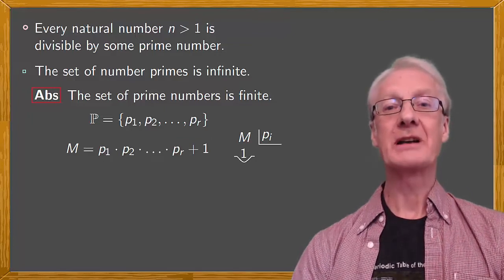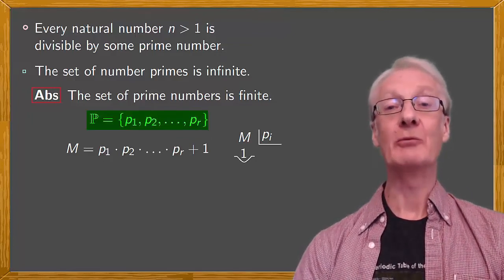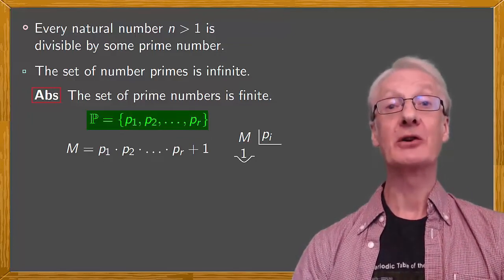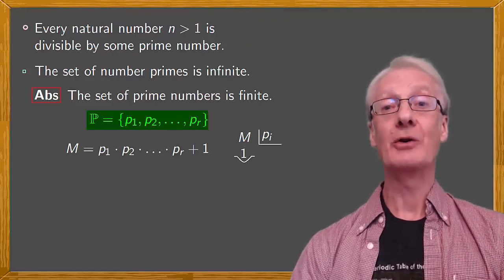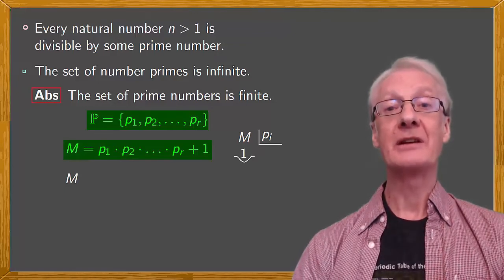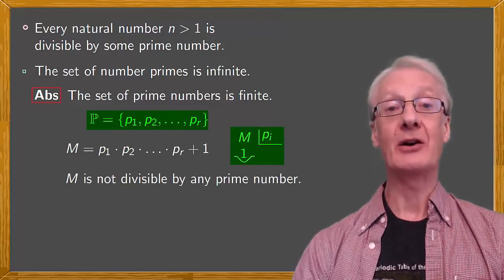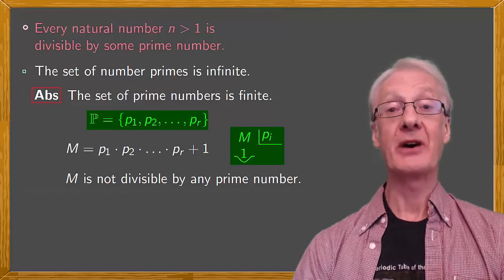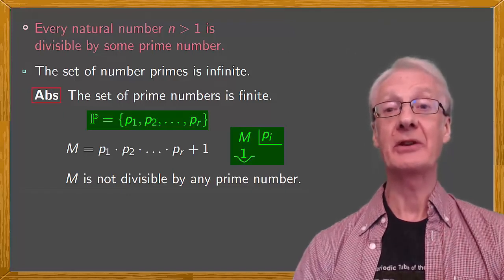We'd started by assuming that the pis from P1 to PR represented all the primes. But now, we've found a natural number M greater than 1, that's not divisible by any of these primes. This violates the fundamental theorem of arithmetic.